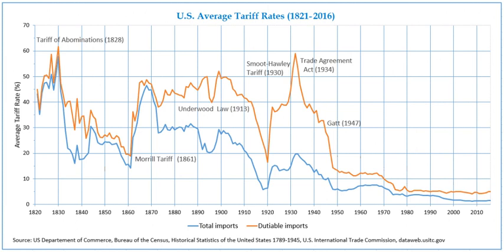Irwin also methodically debunks the idea that protectionism made America a great industrial power — a notion believed by some to offer lessons for developing countries today. As its share of global manufacturing powered from 23 percent in 1870 to 36 percent in 1913, the admittedly high tariffs of the time came with a cost estimated at around 0.5 percent of GDP in the mid-1870s. In some industries, they might have sped up development by a few years.